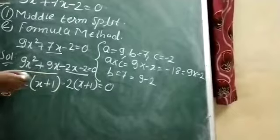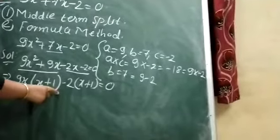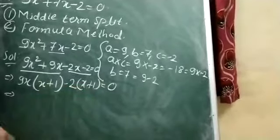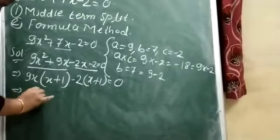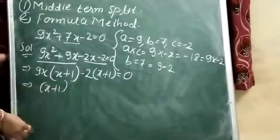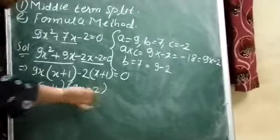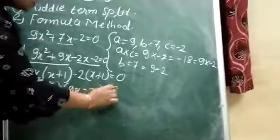As 9x, we are having multiplication of x + 1, and with -2 we are having multiplication of x + 1. So take it common: x + 1. And the rest of the digits I am writing in the second bracket, that means 9x - 2 = 0.